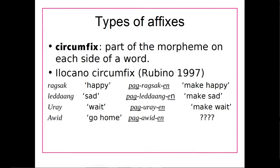So we have those infixes that go in the middle. We also have circumfixes that go on either side — they're a combination of a prefix and a suffix. English doesn't really have circumfixes, but Ilocano does. For example, the word for happy is rogsock. Adding pog- to the start and -n to the end means make someone happy. The same circumfix applied to the word for sad means make someone sad, to the word for wait means make someone wait, and to the word for go home means make somebody go home.